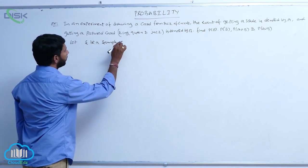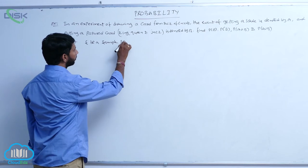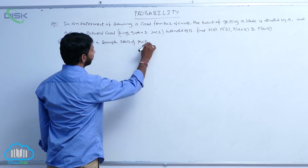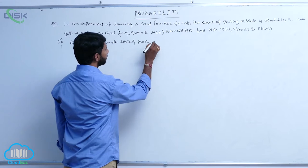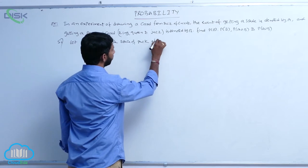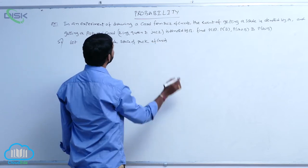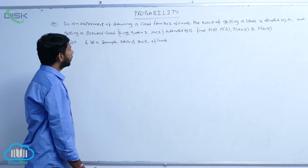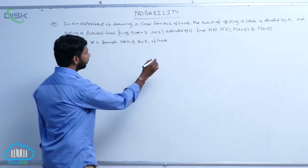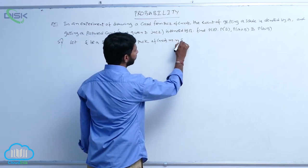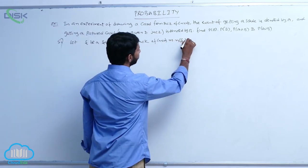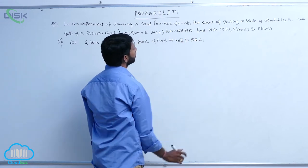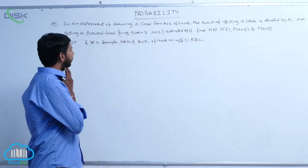Let S be the sample space of a pack of cards. If one card is drawn from the pack of cards, that implies N of S is equal to 52C1.